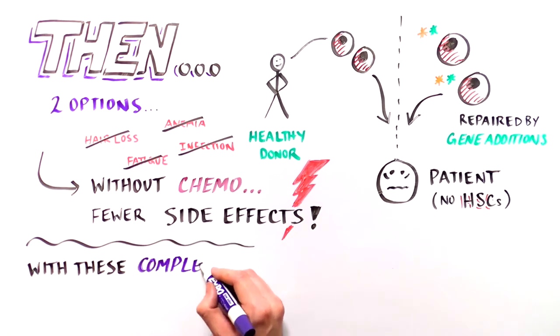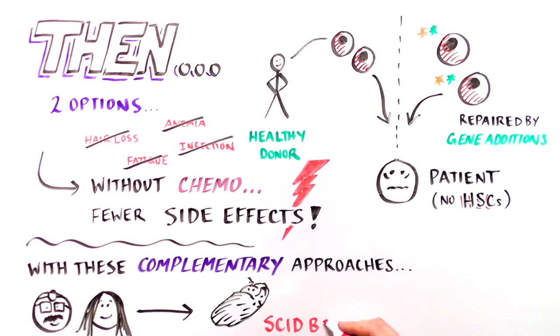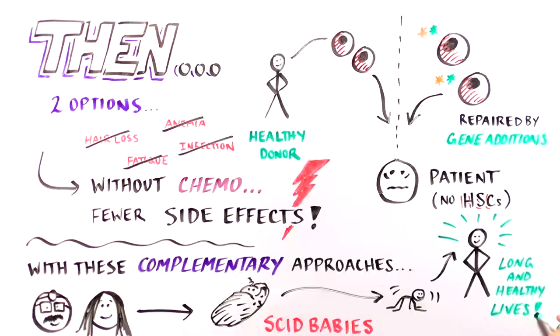By using these two complementary approaches, correcting the mutated gene in a patient's own stem cells and replacing their mutated HSCs with healthy ones, scientists and physicians are helping SCID babies build strong, functioning immune systems and live long, healthy lives.